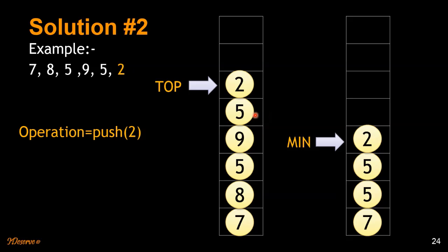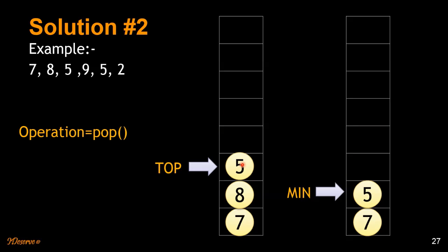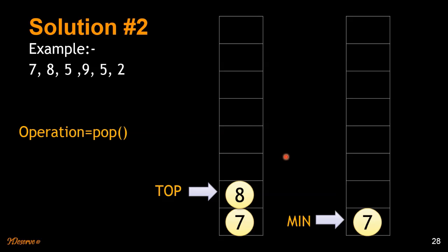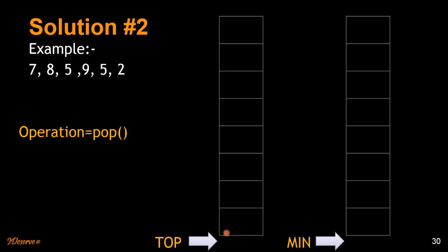At this point the minimum is 5. If there was only one 5 and we hadn't kept track of the duplicate, we would have removed it and the minimum would have incorrectly become 7. If we pop out 5 from the main stack, the minimum for the remaining stack is 7, which is the top of the min stack. Then we pop out 8 — we don't remove anything from the min stack since 8 is not equal to 7. Then we pop out 7 and both stacks are empty.